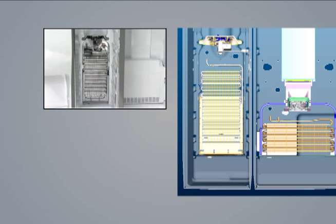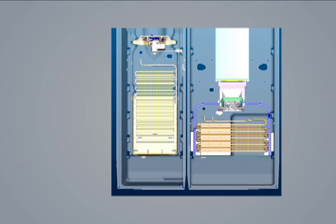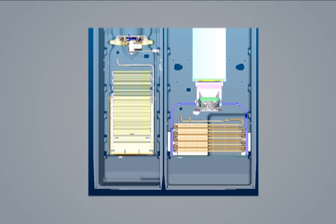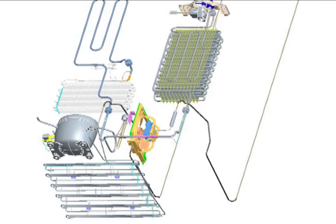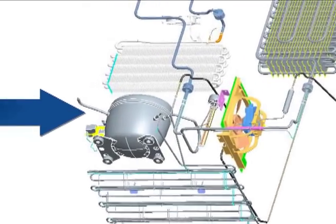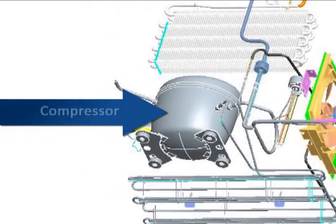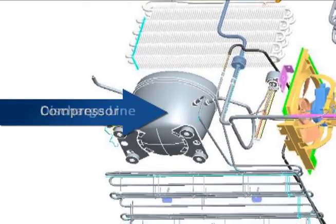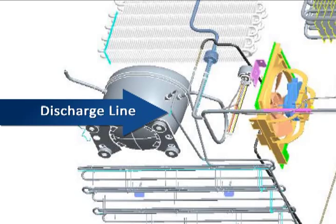There are no air passageways between the two compartments. Now let's identify the remaining components: compressor, discharge line.